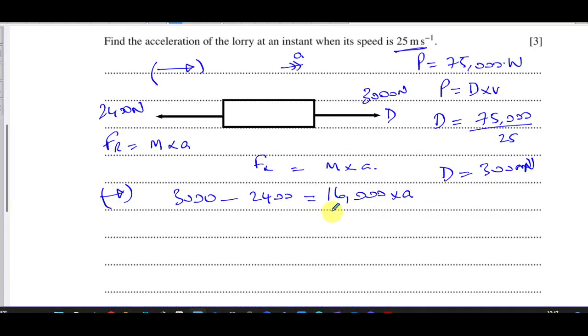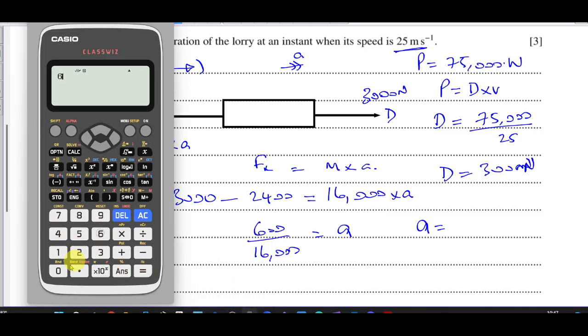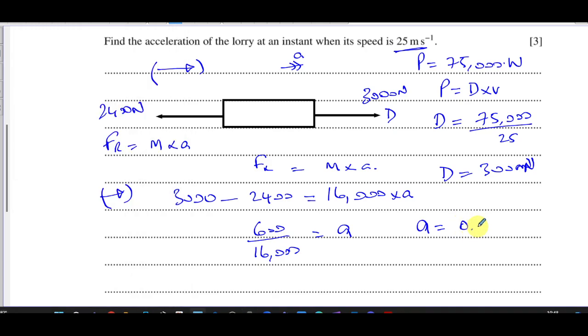So 3000 minus 2400 is going to be 600. Divide that by 16,000. And you'll get the acceleration. So you have 600 divided by 16,000. And that gives us 3 over 80, which is 0.0375 meters per second squared. I'm going to leave it as this figure here because it's an exact value.